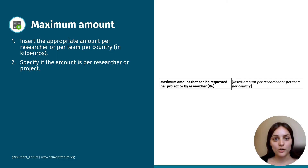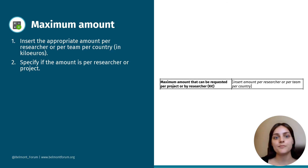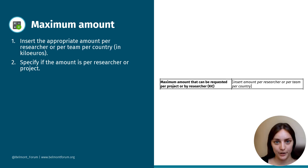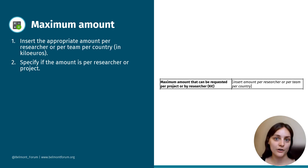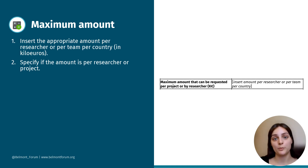The sixth box addresses the maximum amount that can be requested per project or by researcher. Insert the appropriate amount per researcher or per team per country. Again, this is to be written in kilo euros. Specify whether the amount is per researcher or per project.